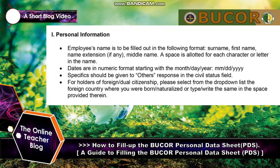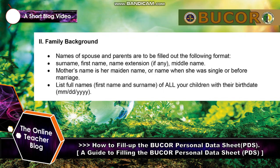For holders of foreign or dual citizenship, please select from the drop-down list the foreign country where you were born, naturalized, or type rights, and write the same in the space provided. Section 2 — Family Background: the name of spouse and parents are to be filled out in the following format: Surname, First Name, Name Extension (if any), Middle Name. The mother's maiden name is her name before marriage. List the full names and birth dates of all your children.